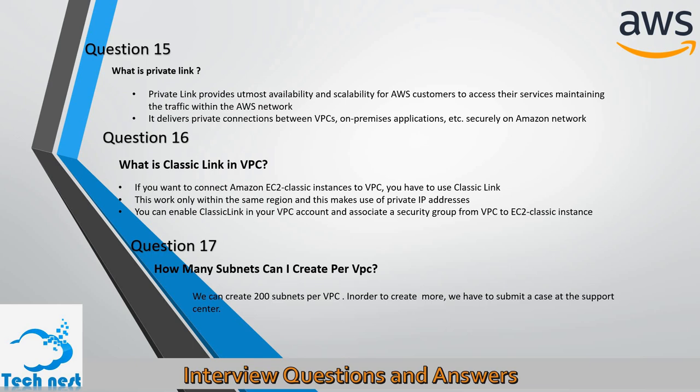Question sixteen: What is ClassicLink in VPC? If you want to connect Amazon EC2 Classic instances to a VPC, you have to use ClassicLink. This works only within the same region and makes use of private IP addresses. You can enable ClassicLink in your VPC and associate a security group from the VPC to an EC2 Classic instance.